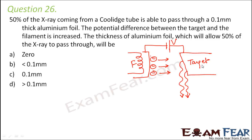When the potential difference is increased, kinetic energy increases, and as a result the distance after which the electrons are brought to rest also increases. Therefore, the thickness of the target material should also increase. The electrons are coming faster and need more distance to stop, so the aluminum foil thickness should be greater than 0.1 mm.